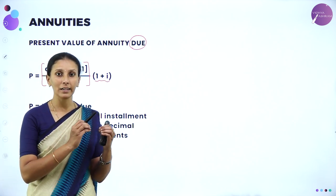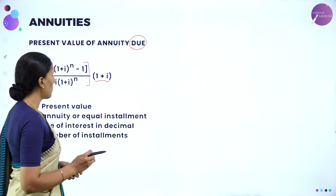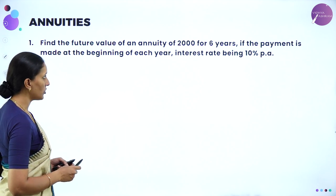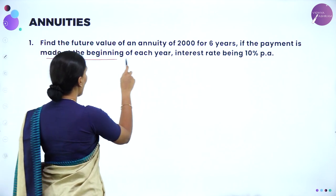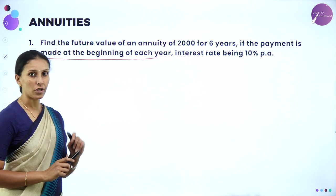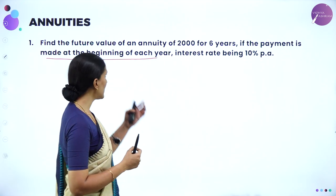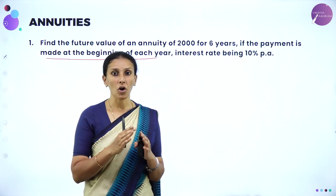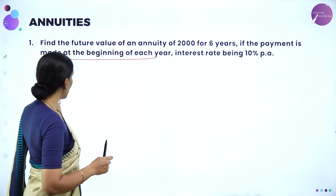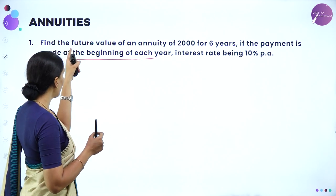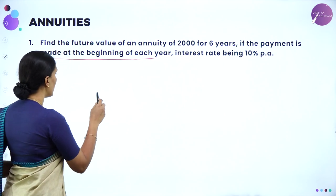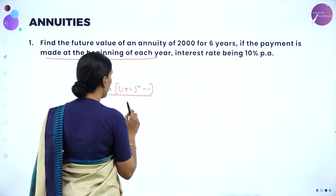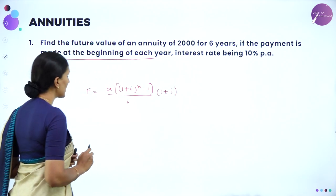Now let us take problems to calculate the future value and present value of annuity due. Problem 1: Find the future value of an annuity of 2000 for 6 years, if the payment is made at the beginning of each year, interest rate being 10%. Since the payment is made at the beginning of each year, we use the annuity due formula. The formula is A into (1 plus I) whole to the power N minus 1, whole divided by I into (1 plus I) into (1 plus I).